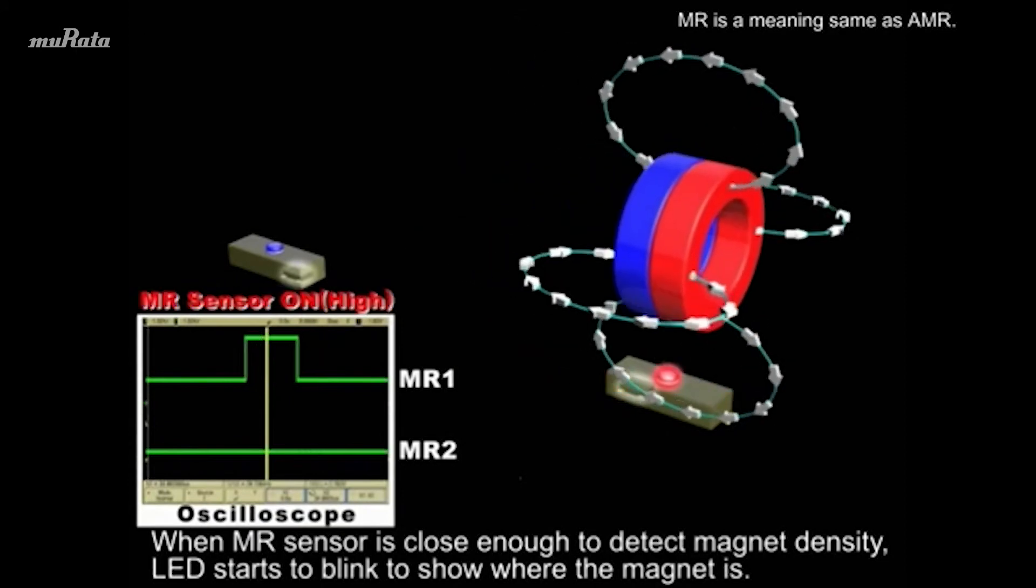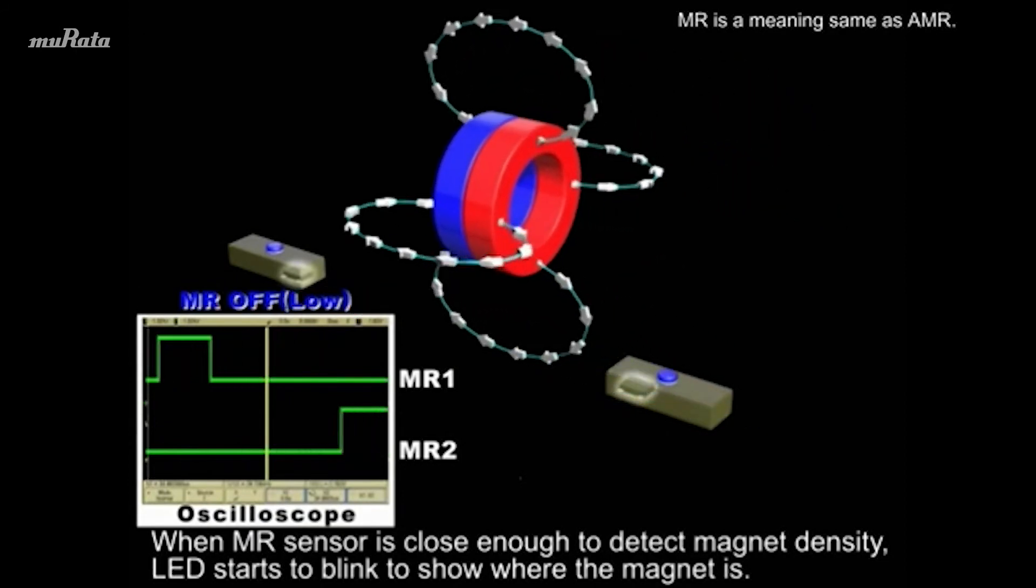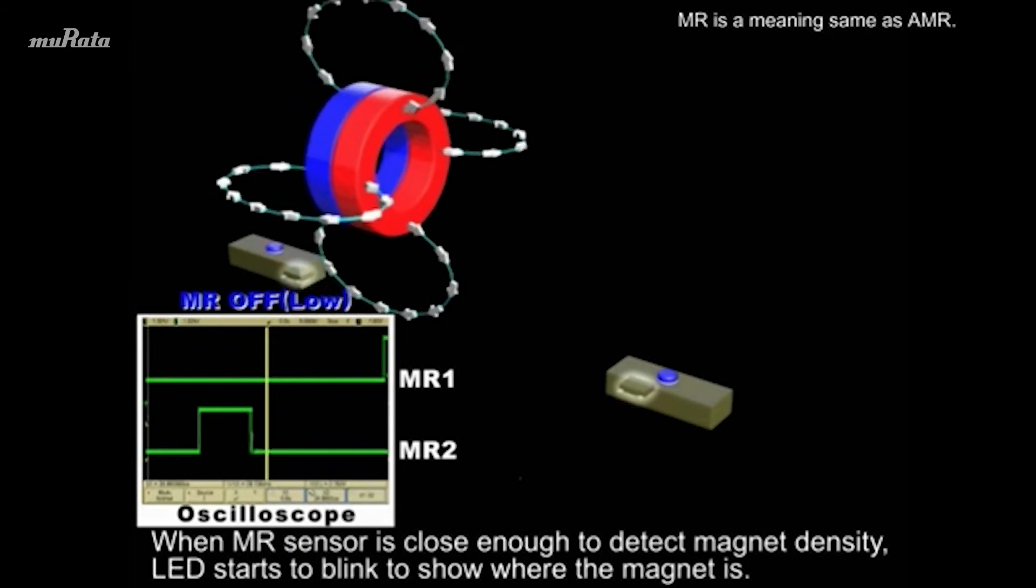When MR sensor is close enough to detect magnet density, LED starts to blink to show where the magnet is.